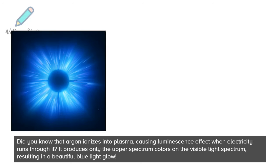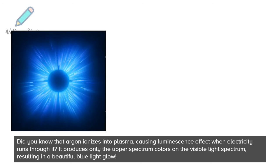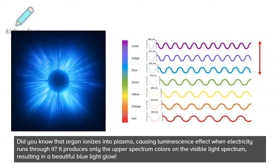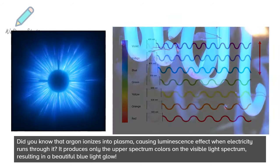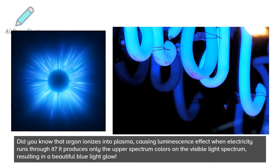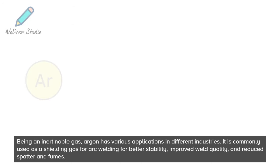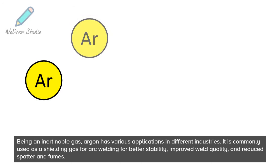Argon ionizes into plasma, causing a luminescence effect when electricity runs through it. It produces only the upper spectrum colors on the visible light spectrum, resulting in a beautiful blue light glow. This property is used by sign makers to produce a pleasing, eye-catching blue color, enhancing the visual appeal of neon signs.